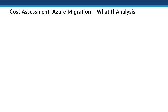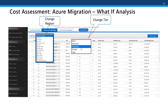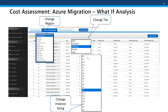Now we're going to look at some what-if analysis around Azure migration. In the tool you're able to change the region and geography that you want to migrate to, and that will update all the costs. You also have the ability to change the tier — for example, you might not agree with our recommendations based on your additional knowledge of the infrastructure and might recommend some changes.